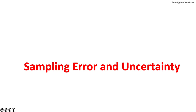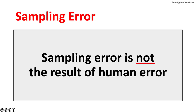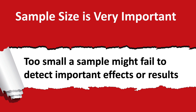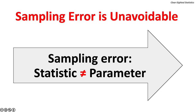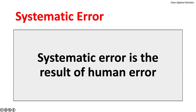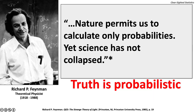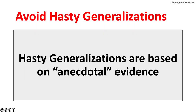Let's turn to sampling error and uncertainty. Sampling error is not the result of human error. Sampling error is unavoidable. Sampling error occurs when the sample statistic does not equal the population parameter. Systematic error, on the other hand, is the result of human error. Remember, truth is probabilistic. To quote Richard P. Feynman: nature permits us to calculate only probabilities, yet science hasn't collapsed. When conducting any investigation of quantitative data, avoid hasty generalizations.